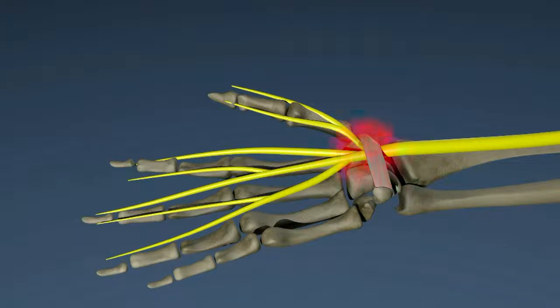Carpal tunnel syndrome can be confirmed using a test called an EMG. An EMG measures the ability of the nerves to conduct proper signals.